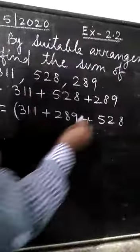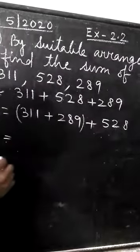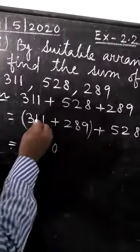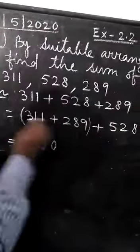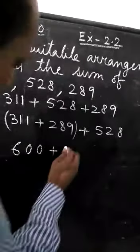And then, let me first add these two. Now, students, what will be the answer? 9 plus 1, 10. 0, carry 1. 8 plus 1, 9 and 1, 10. 0, carry 1. 3 and 2, 5 and 1, 6. 600 and then write this one, 528.